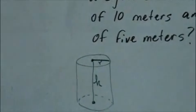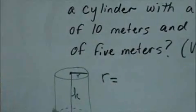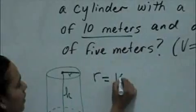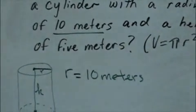And then we're going to go ahead and see how much our units are. So we're talking about the radius. Our radius is 10 meters. And our height is 5 meters.